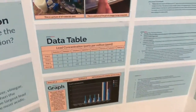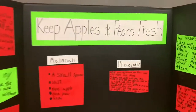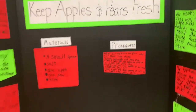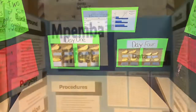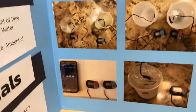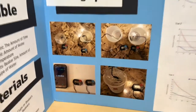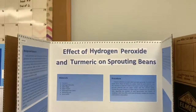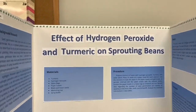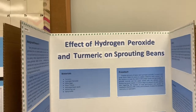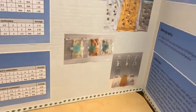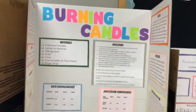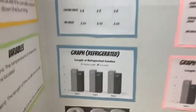Up next — 'Get the Lead Out.' We have a few pictures of the experimental process and procedures. Next is 'Keep Apples and Pears Fresh,' followed by the 'Pimba Effect.' Then we have 'Effect of Hydrogen Peroxide and Turmeric on Sprouting Beans.'